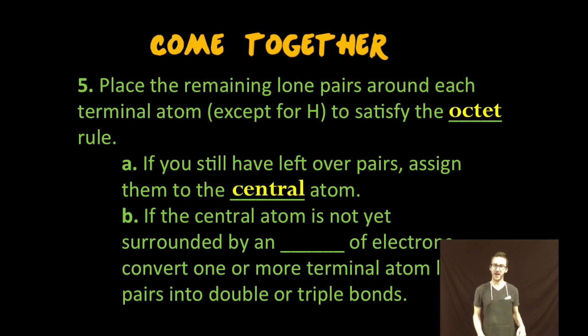If you still have leftover pairs after you put them on the terminal atom, then put them on the central atom. And if the central atom is not yet surrounded by an octet of electrons and you don't have any pairs to give it because you've used them all already, convert one or more terminal lone pairs to double or triple bonds.